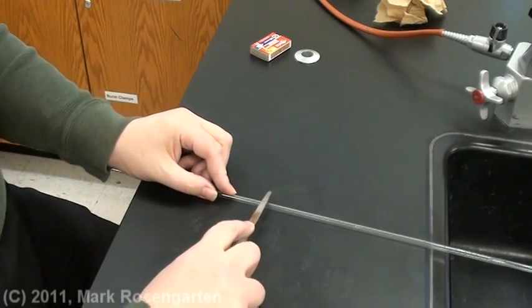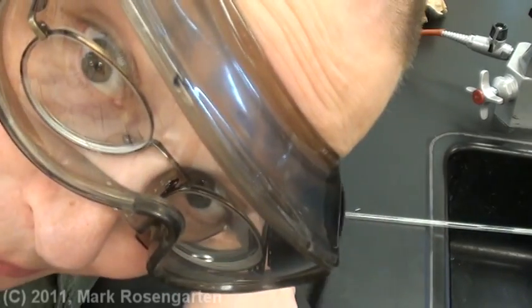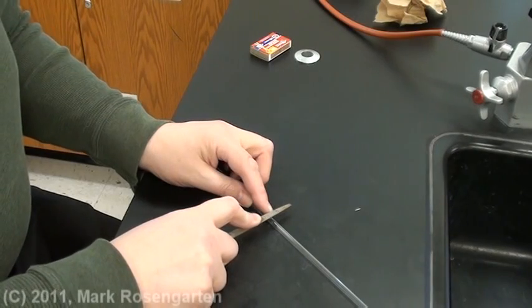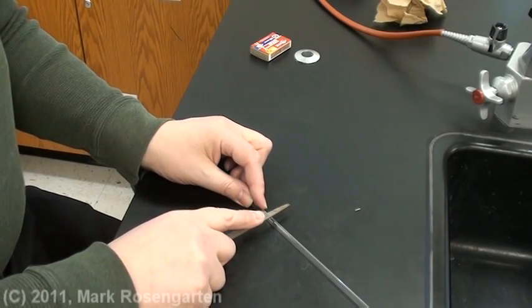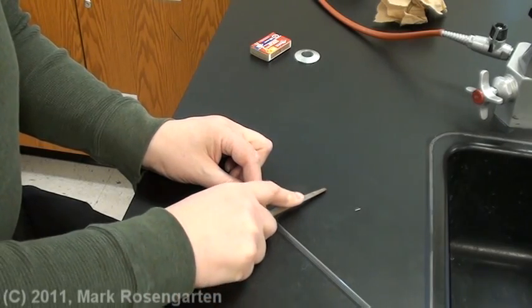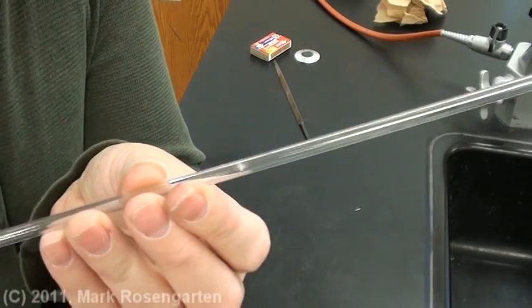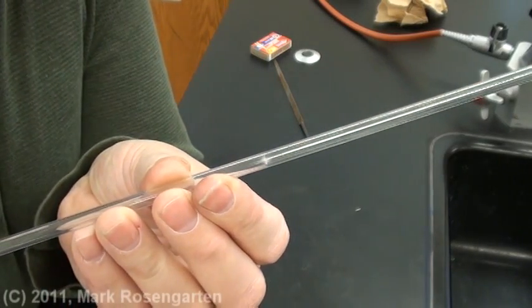Then, place the file perpendicular to the glass tubing at a 90 degree angle. Because that's what perpendicular means. And then push down and across once. Deep scratch.